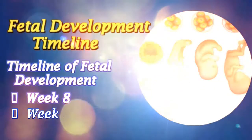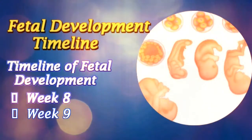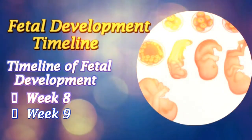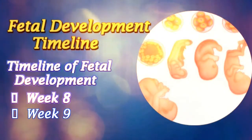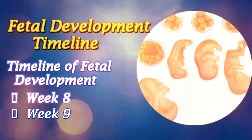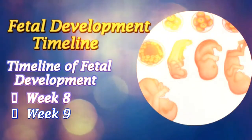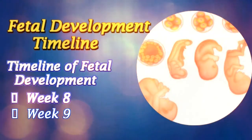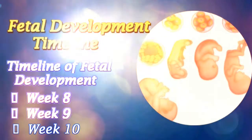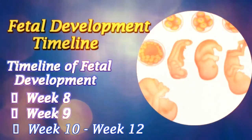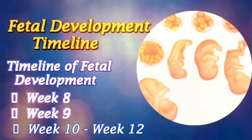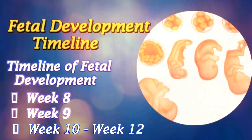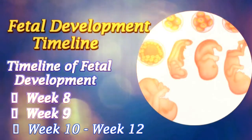Week 9: The embryo measures around 18 mm in length. Hair follicles and nipples begin to form. Most of the essential organs have begun formation. At times, spontaneous limb movements can be detected with the help of ultrasound. Weeks 10 to 12: The embryo measures 30 mm in length. Facial features start to develop. The head comprises nearly half of the fetus size. Tooth buds appear and the face is well formed. The limbs are long and red blood cells are produced in the liver.